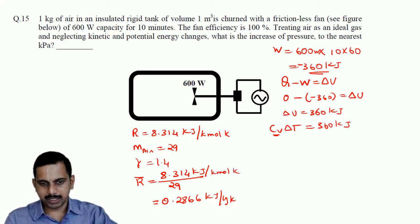The units are kJ per kmol kelvin divided by kg per kmol. Kmol cancels and we get the characteristic gas constant in proper units.